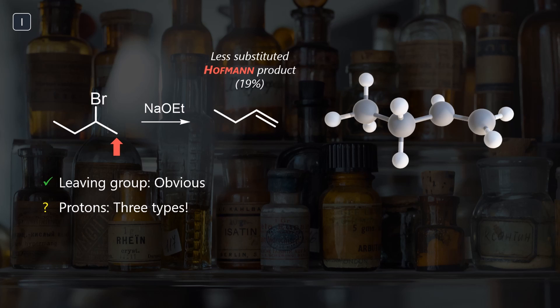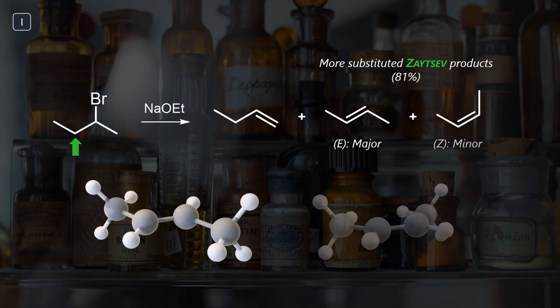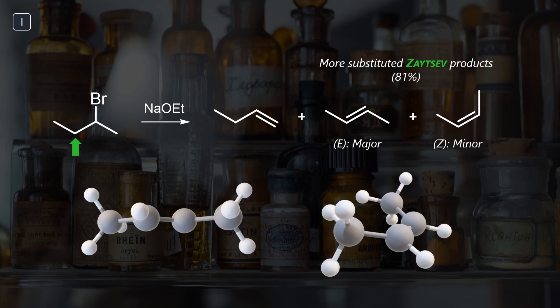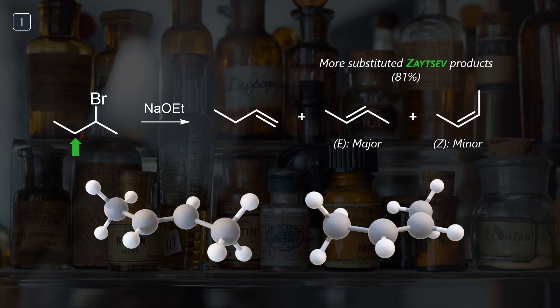Instead, thermodynamic preference is at play. We have additional internal protons which give rise to more substituted olefins. You will know that these are usually more stable energetically. The two isomers E and Z arise from deprotonation of two different protons.